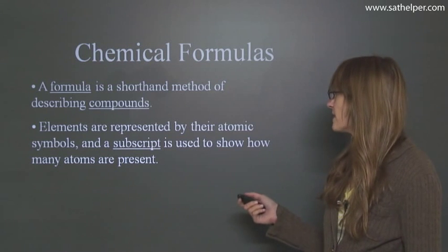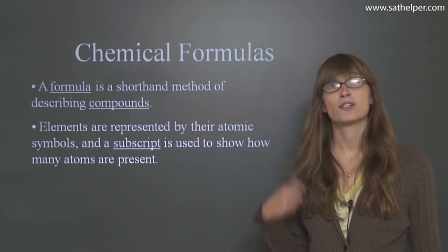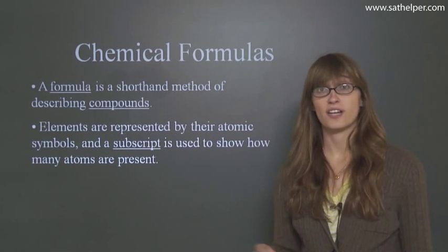So elements are represented by their atomic symbols, and a subscript is used to show how many atoms are present. So let's take a look at what these chemical formulas look like.